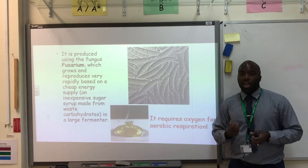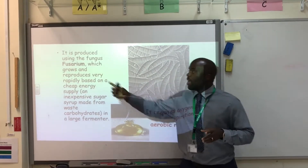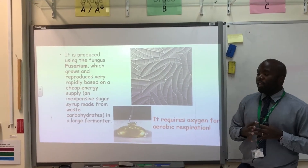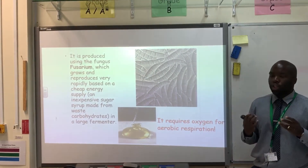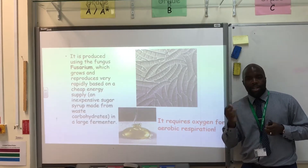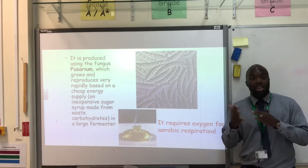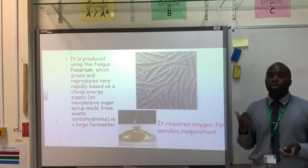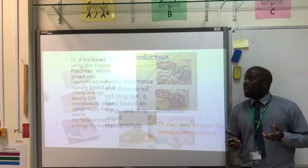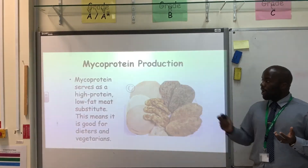Micro protein is made when we use a fungus. A key word here is Fusarium. This Fusarium fungus grows very, very fast and it has branch-like structures. These branch-like structures end up feeling, tasting, and having a similar texture to meat. It's very rich in protein and therefore can be used as a meat substitute. It has nothing to do with animals, so it's also good for vegetarians. You can see this in the supermarkets in the form of Quorn mince, Quorn chicken, Quorn beef, etc.